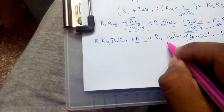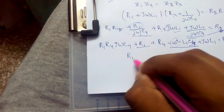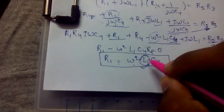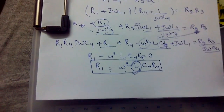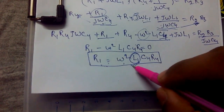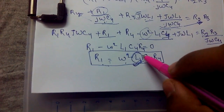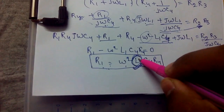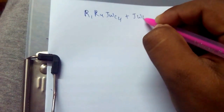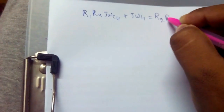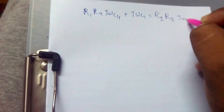Now equating the real terms, we get R1 minus omega squared L1 C4 R4 equals R2 R3. This is not the final term for R1 because there is unknown inductance L1, therefore we need to find L1 first. Now equating the imaginary terms: R1 upon J omega C4 plus J omega L1 equals R2 R3 J omega C4.